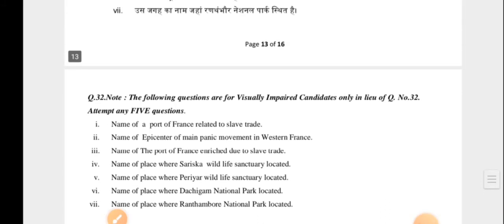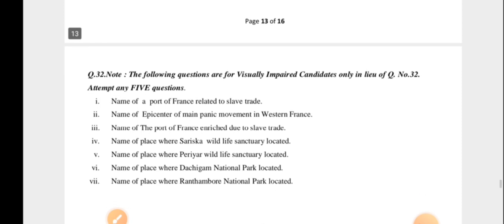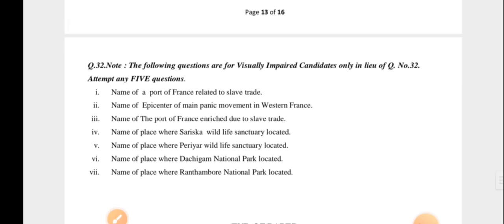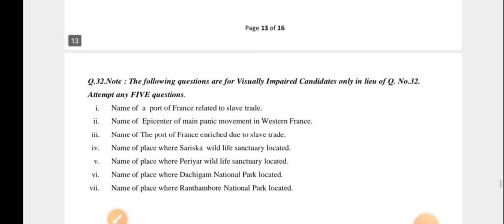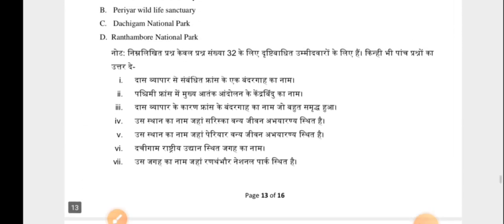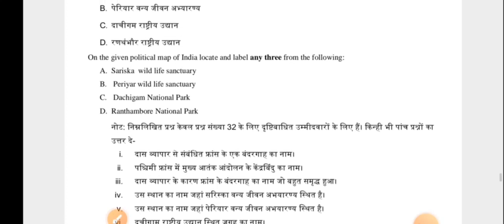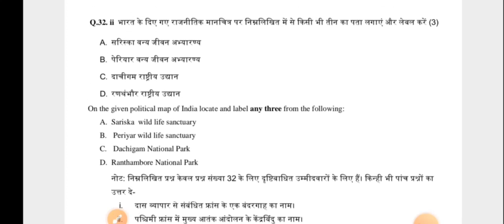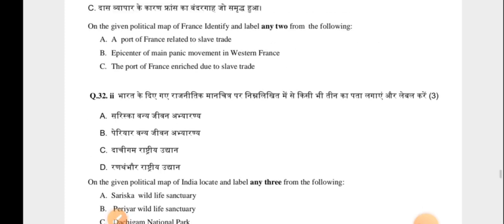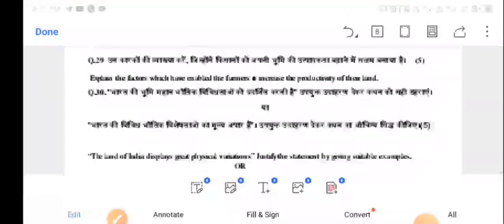Here are some example questions. You have to name a port of France related to the slave trade, so you name it there. You have to answer any 5 out of the options given. For visually impaired candidates, alternate questions have been provided. For the political map of India, you have to locate and label any 3 of the following 4 options given.